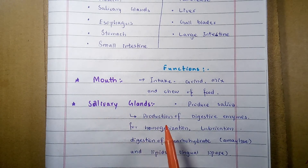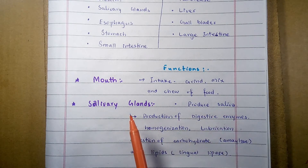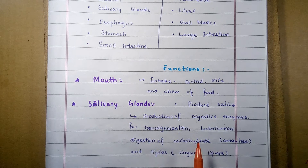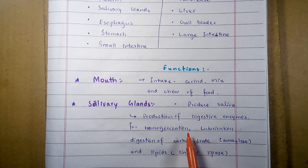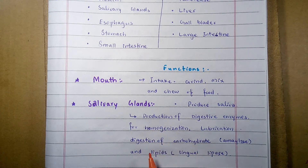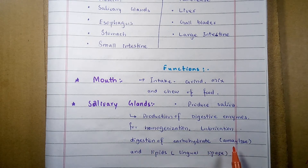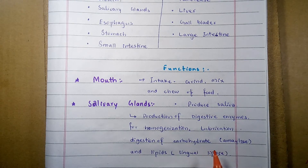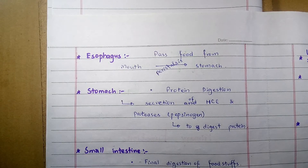The salivary glands collectively produce saliva. These are paired glands: the parotid glands, submandibular glands, and the lingual glands. Their secretions produce saliva, which is responsible for providing fluid and digestive enzymes for homogenization, lubrication, digestion of carbohydrates and lipids. Carbohydrate digestion is catalyzed by alpha-amylase (also called ptyalin) and lipid digestion is catalyzed by lingual lipase.